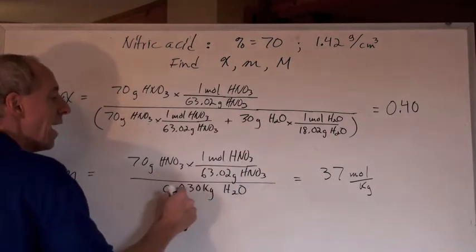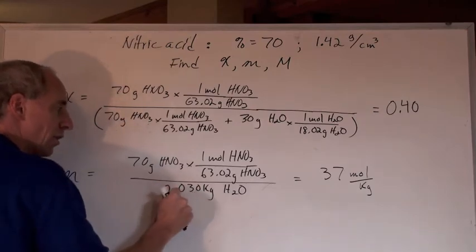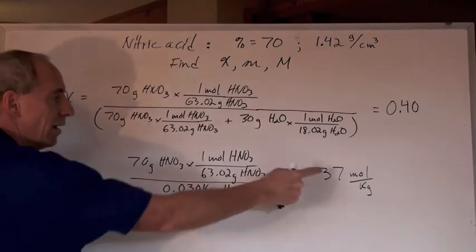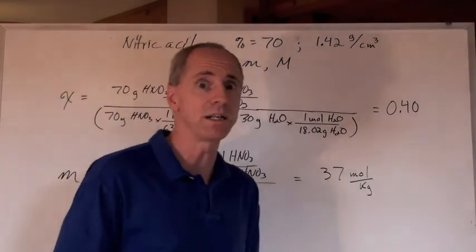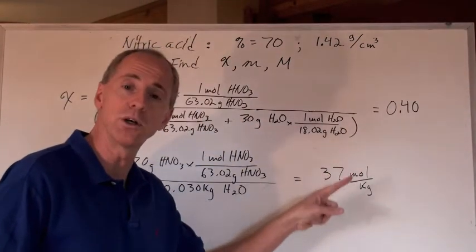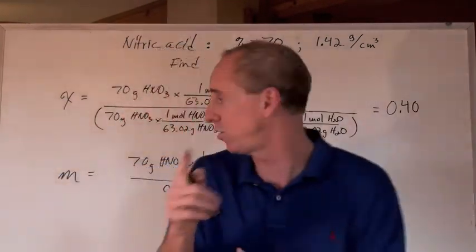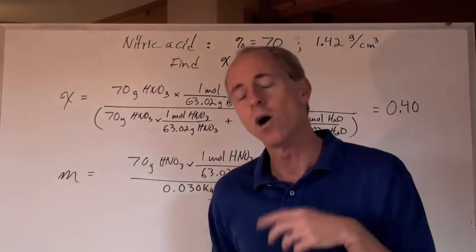The water is 30 grams, and turning that into kilograms, 0.030 kilograms, gives you 37. That's a pretty big number. 37 moles per kilogram, which is the unit for molality.